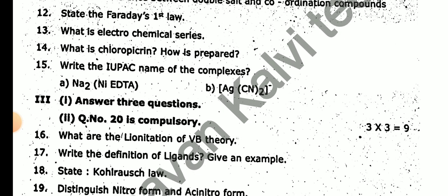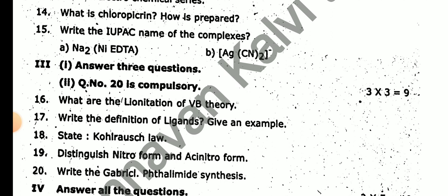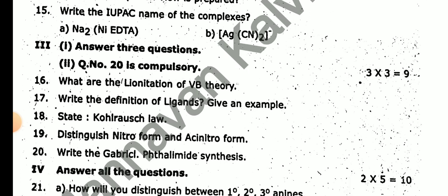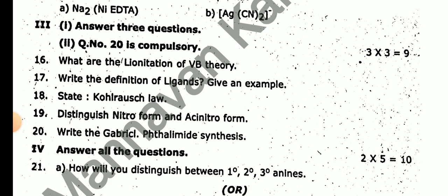Answer to the 3-mark question, 3 into 3 = 9: What are the limitations of VBT theory? Write the definitions of lignites. Give an example. State Gold Rush law. Distinguish nitro from acetro form.